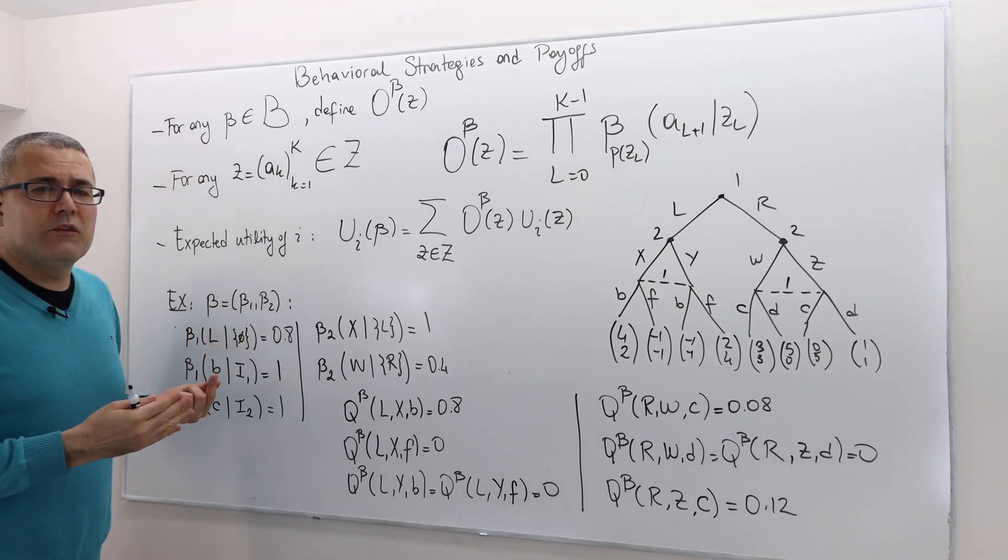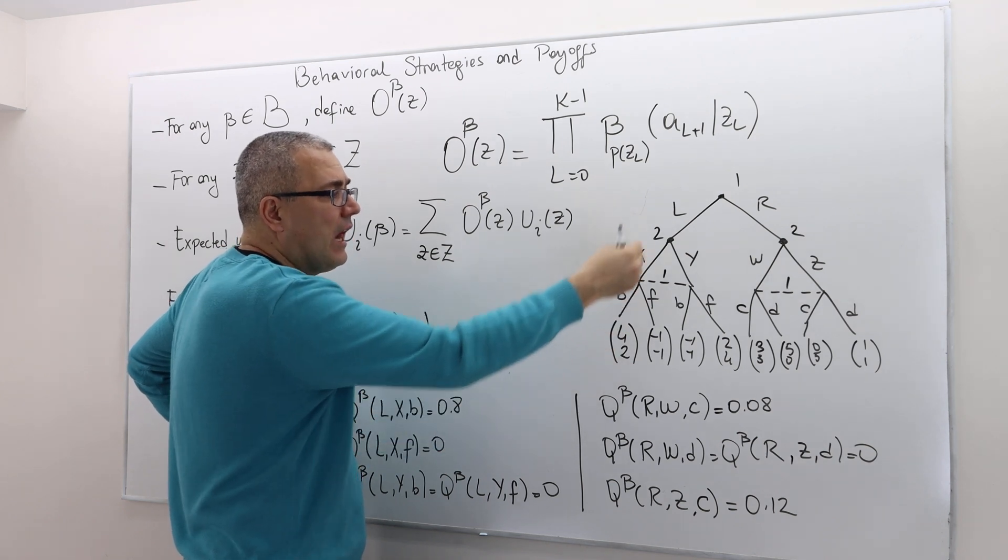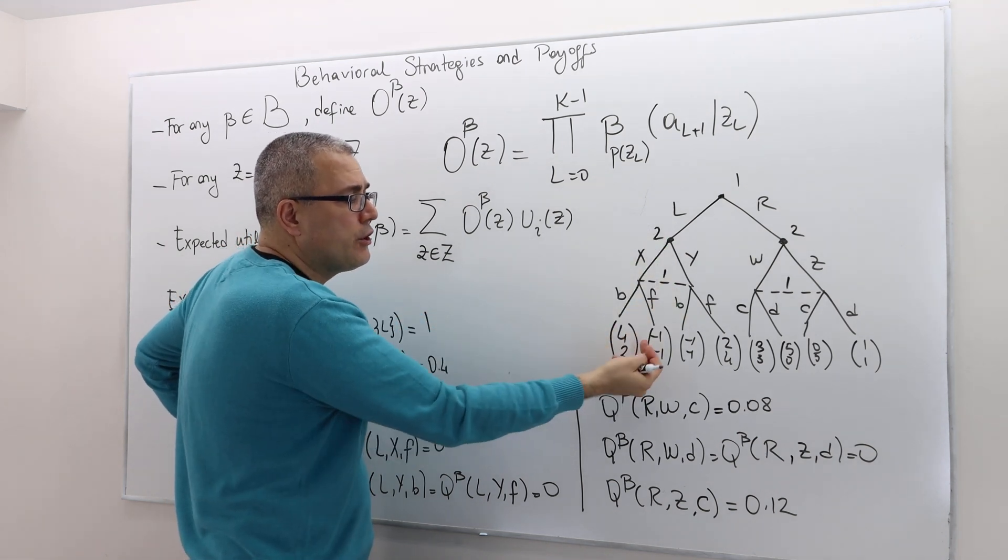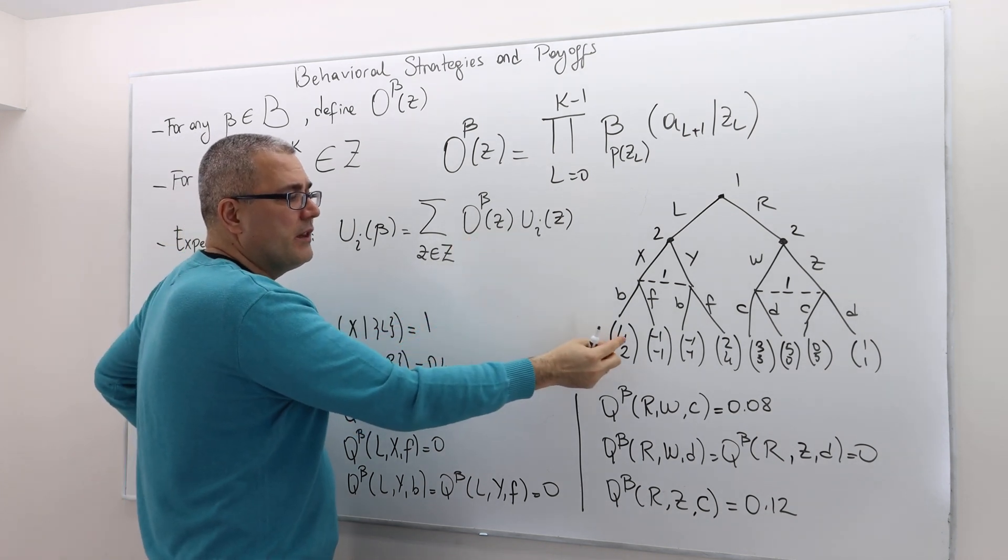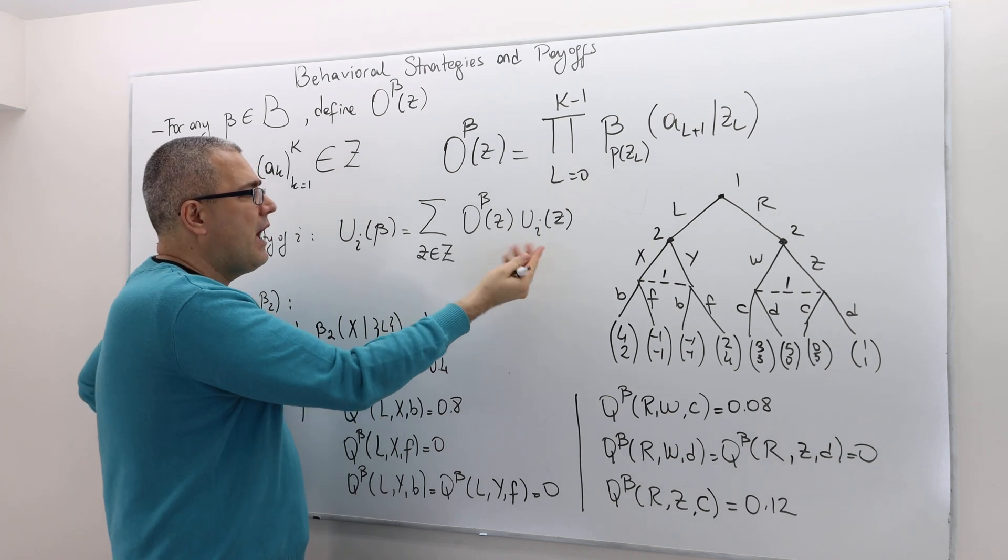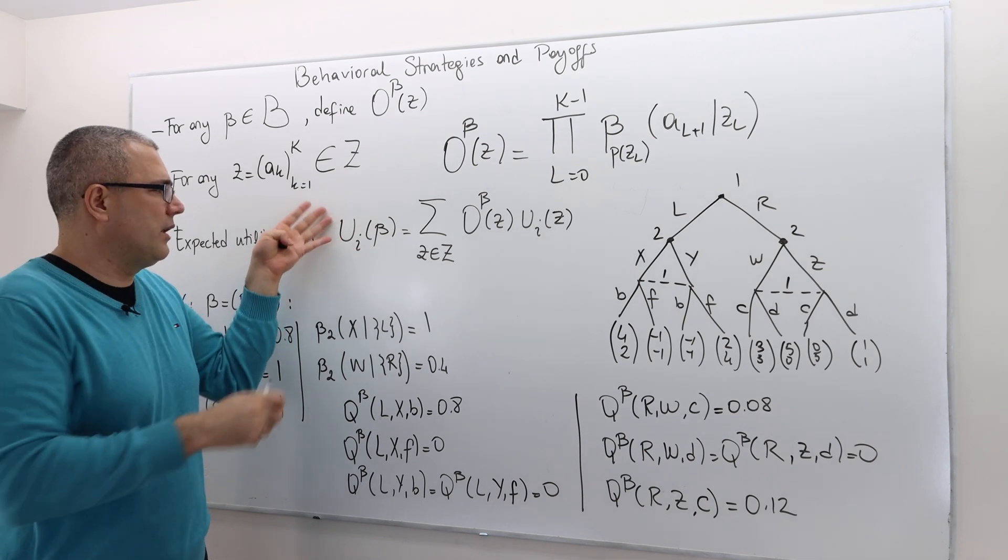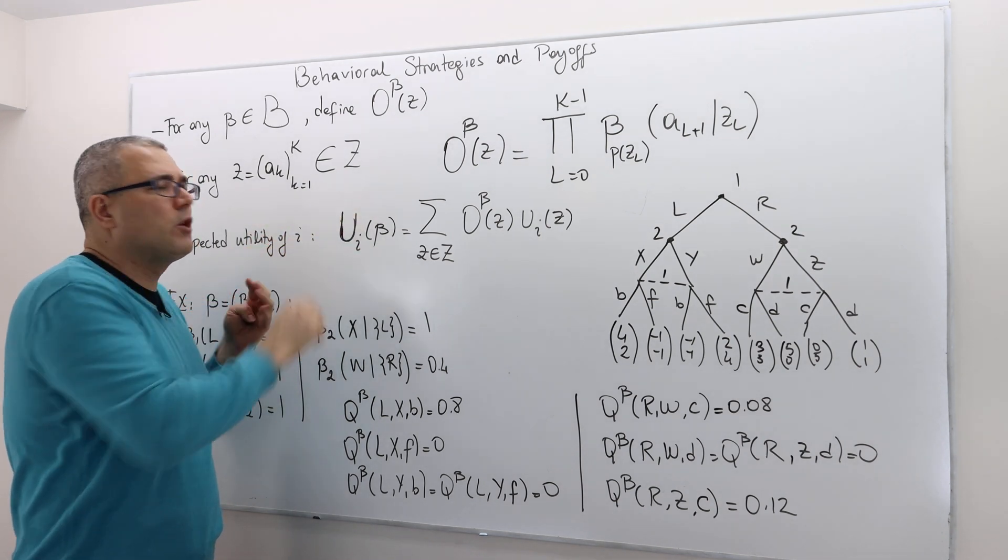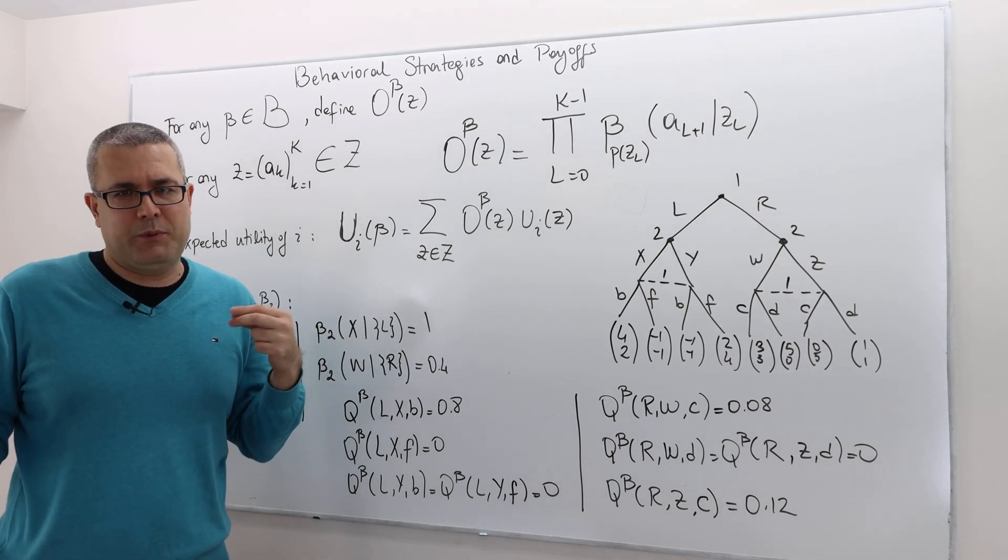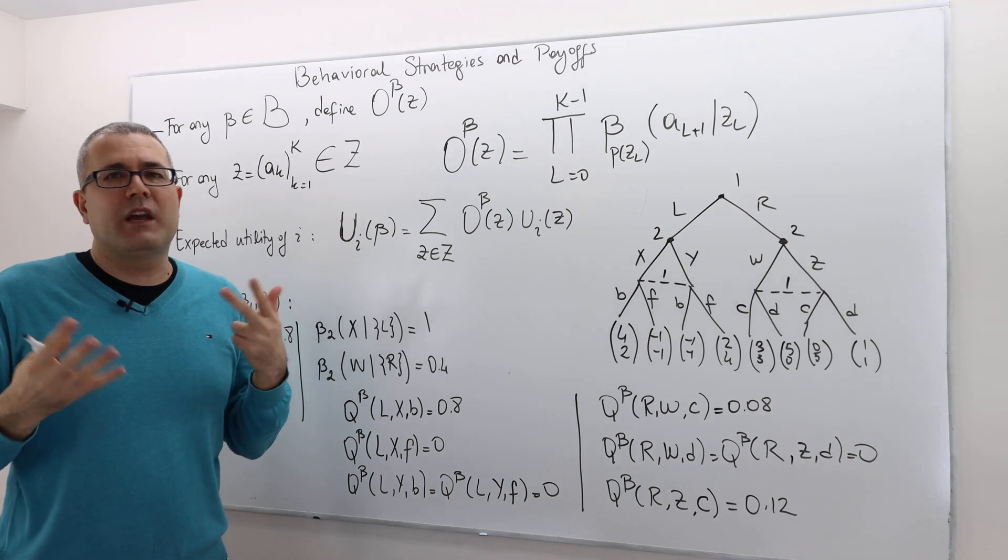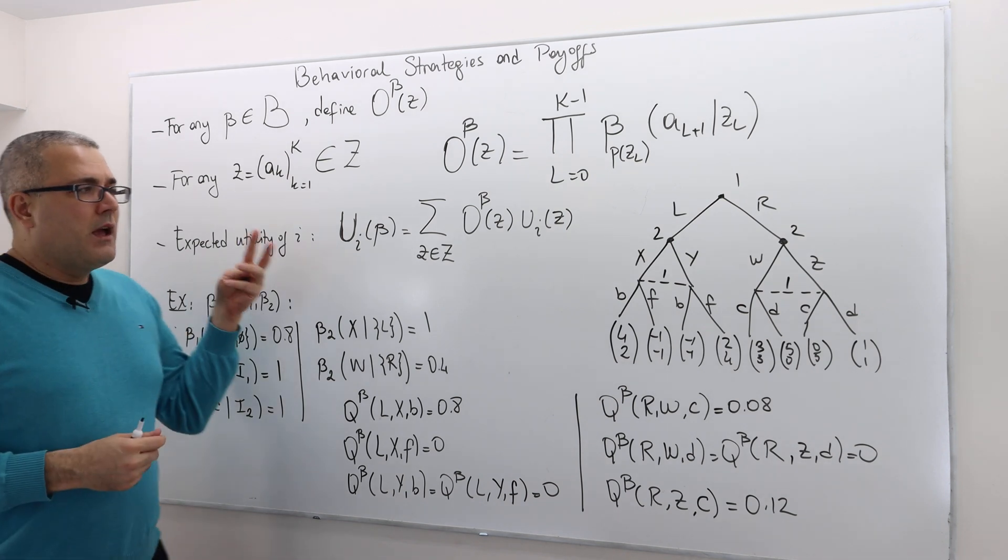The expected utility of each player R is very simple. I calculate the likelihood of each of those payoff vectors occurring, which is O(β,Z), and then multiply those probabilities with the payoffs player will achieve, and then add them up. I also denote the expected payoff sometimes, this is capital U, but later I will always use small u to denote von Neumann-Morgenstern utility or the expected utility.